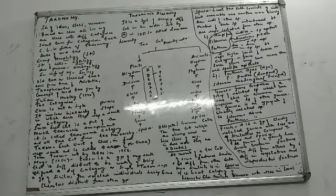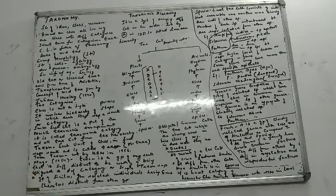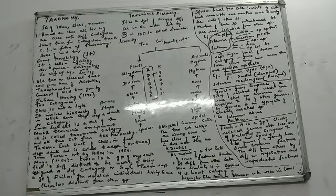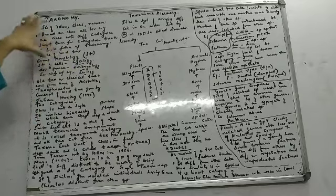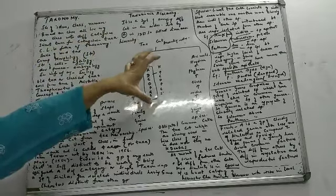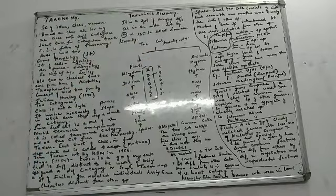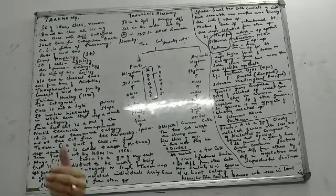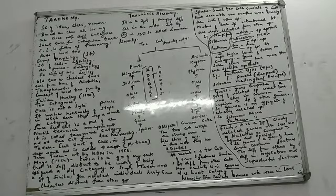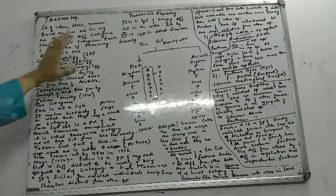What is taxonomy? It is the science of — remember three words — identification, classification, nomenclature. You identify something new, you give it a class, you put it in a specific place — this is classification — and you name it.